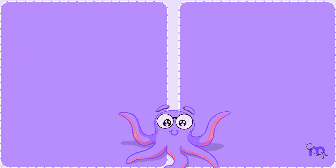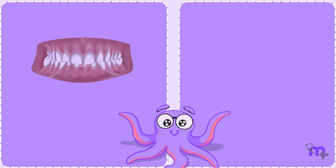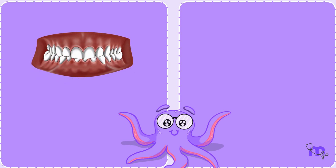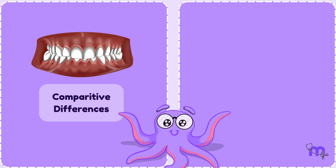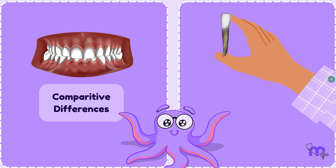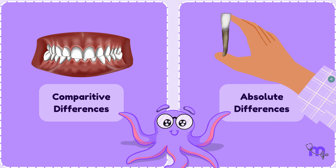It can be learned in two ways. One, by viewing both teeth simultaneously side by side to note the comparative differences. Second, are the standalone features that can be noted while observing a single tooth, called absolute differences.